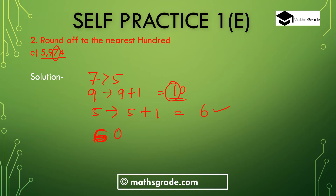The carry over 1 is added to the 1000s digit 5, giving 5 plus 1 equals 6. Write down 0 in the 10th place and 0 in the unit place. So 5974 rounded off to the nearest 100 will be 6000.